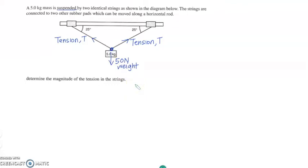Now we can't simply say that each of the tensions is 25 Newton, because the strings are obviously at an angle and the weight is vertical. So let's recap what exactly resolving of forces is before we come back to this particular question.